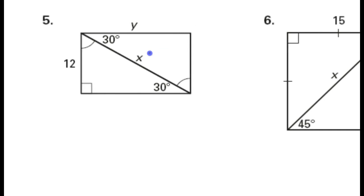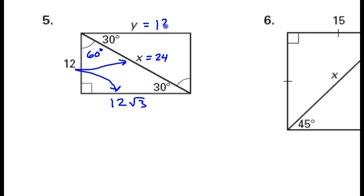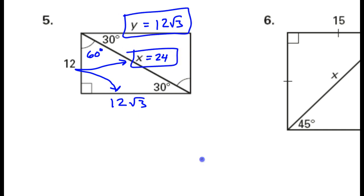Looking at number 5 — I've got my 30, so this must be 60. Looking at this triangle, they were kind enough to give us the short leg across from the 30. If I want to get the hypotenuse, I double this, so x must be 24. If I want to get the long leg, multiply by radical 3, so this must be 12 radical 3. Now, this is a rectangle, so this side and this side are the same — so this must also be 12 radical 3. So x is equal to 24 and y is equal to 12 radical 3.